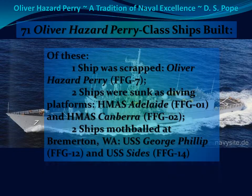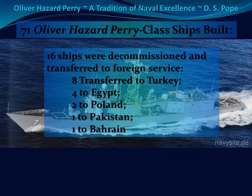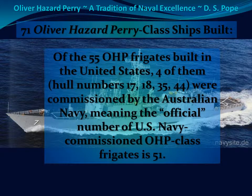Of these, one was scrapped — Oliver Hazard Perry, the original. Two ships were sunk off the coast of Australia: the HMAS Adelaide and the HMAS Canberra. Two ships are mothballed and transferred to Washington. Sixteen ships, after they were decommissioned, were transferred into foreign service: eight to Turkey, four to Egypt, two to Poland, one to Pakistan, and one to Bahrain. Of the 55 Oliver Hazard Perry frigates built in the United States, four — hull numbers 17, 18, 35, and 44 — were commissioned by the Australian Navy, meaning the official number of U.S. Navy-commissioned Oliver Hazard Perry-class frigates is 51.